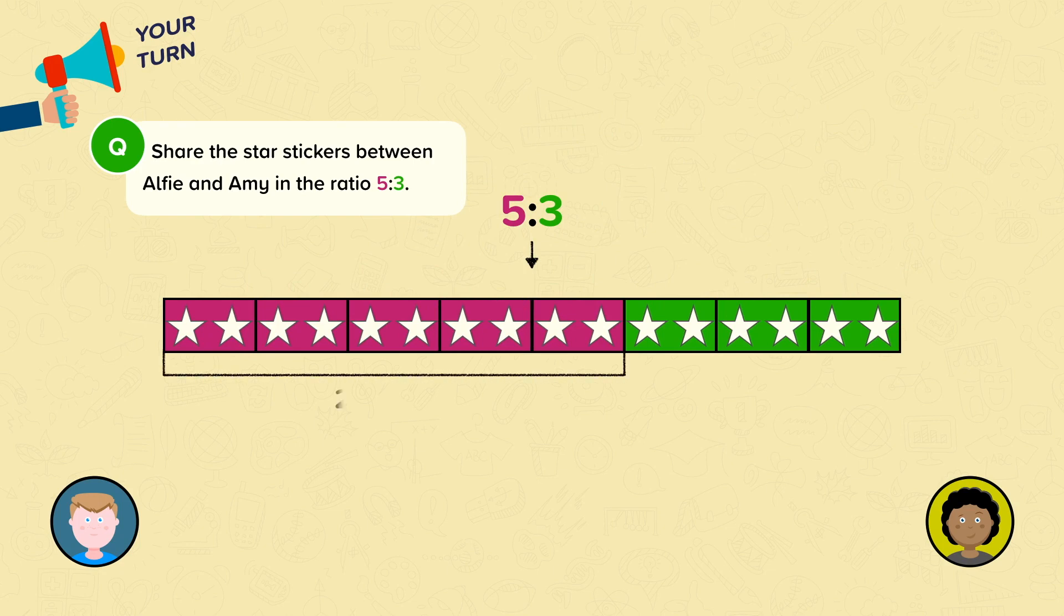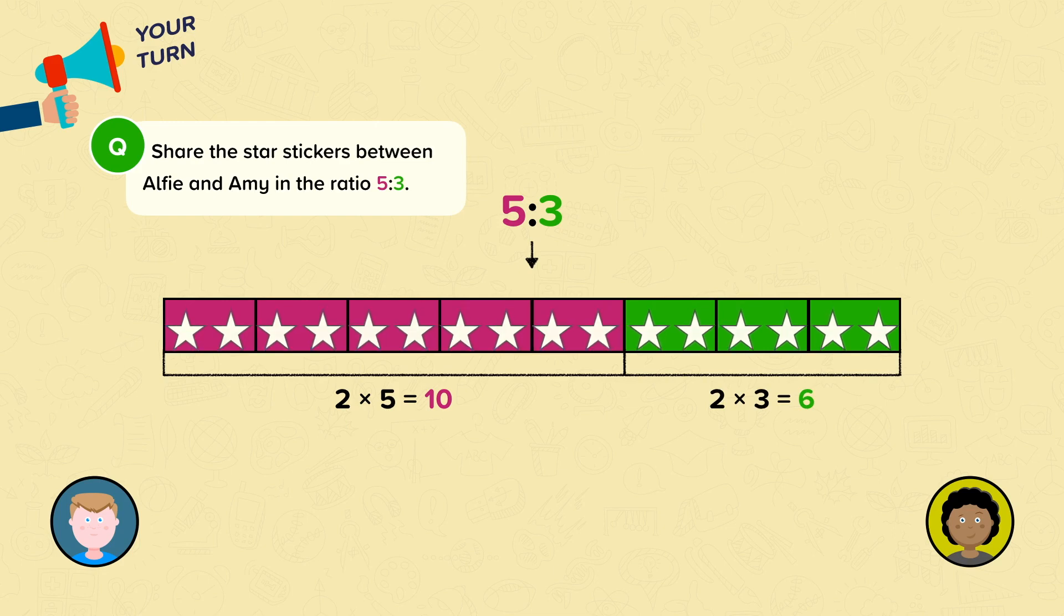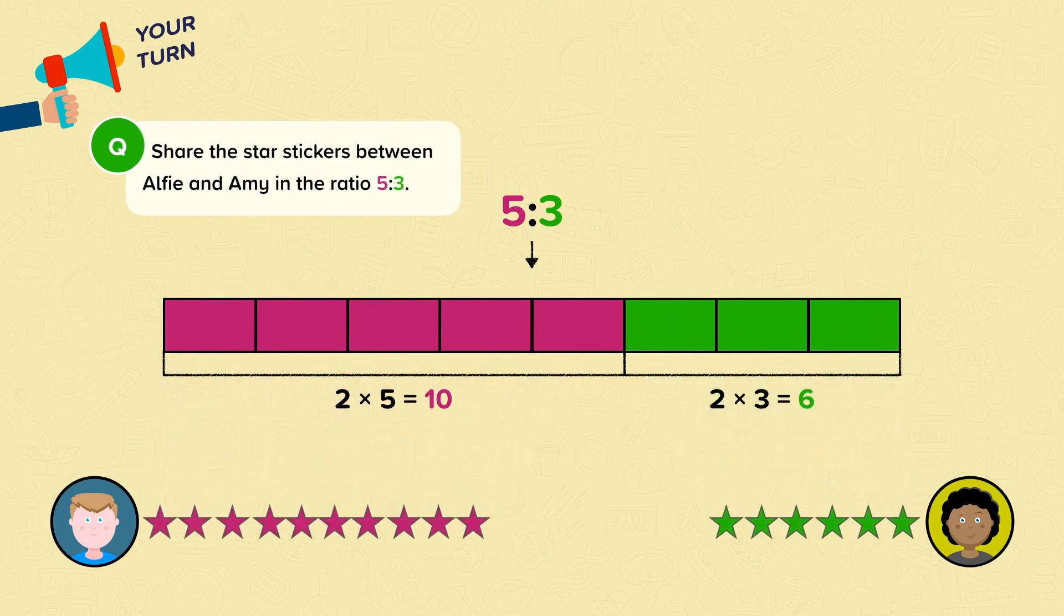Alfie has five parts: 2 times 5 equals 10. Amy has three parts: 2 times 3 equals 6. Alfie has 10 stars, Amy has six.